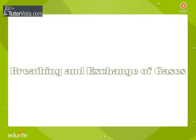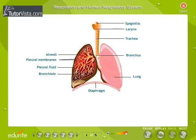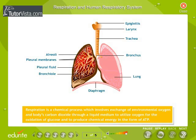Respiration and the human respiratory system. Respiration is a chemical process which involves the exchange of environmental oxygen and the body's carbon dioxide through a liquid medium, to utilize oxygen for the oxidation of glucose and to produce chemical energy in the form of ATP.